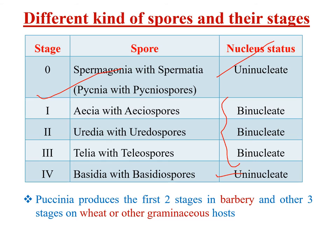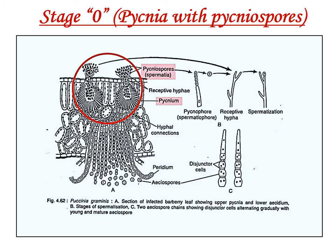Puccinia produces the first two stages — spermogonia and aecia — on the barberry plant, whereas the three other stages — uredinia, telia, and basidia — are associated with wheat (basidia are produced from teliospores during germination). Now let us examine the significance of these various stages and why all five must be produced in the Puccinia life cycle.